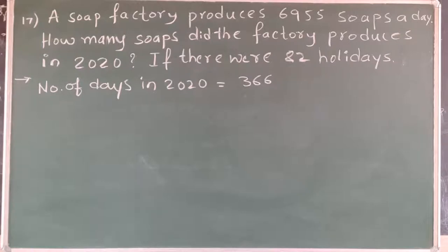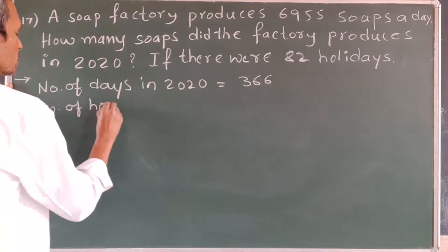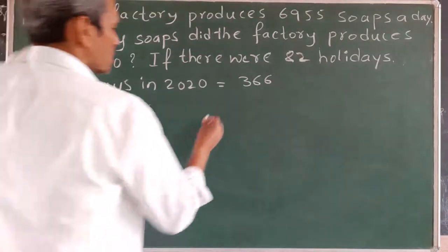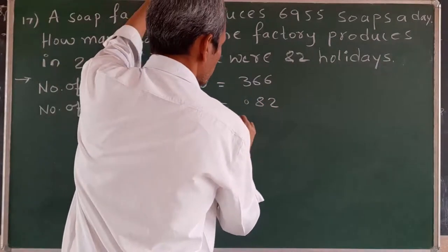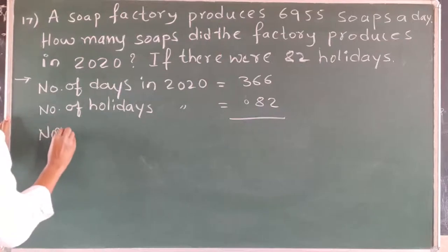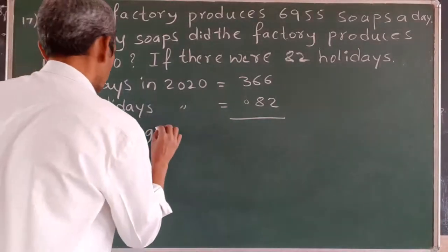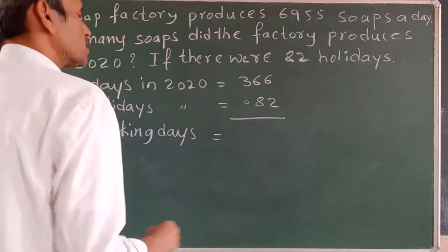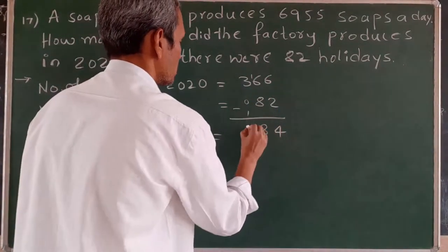In these 366 days, factories were closed on 82 holidays. So the factory will not produce soaps on holidays. We should subtract the number of holidays from the total days. Number of holidays in 2020 is 82. If we subtract 82 from 366, we will get the number of working days: 366 minus 82 equals 284 days. The factory will work for 284 days.